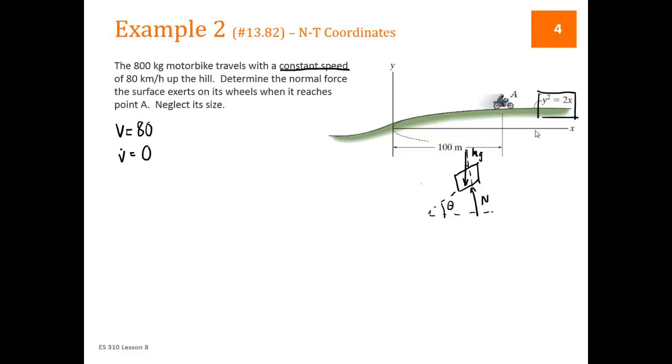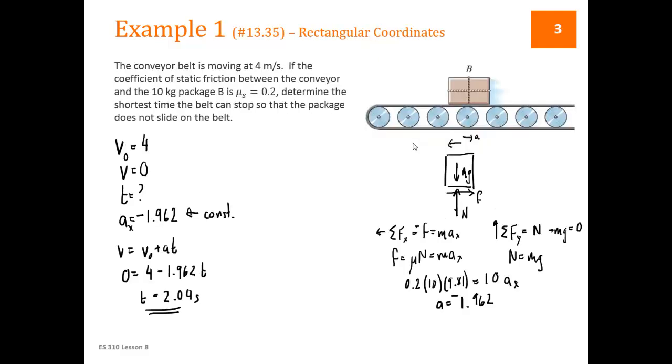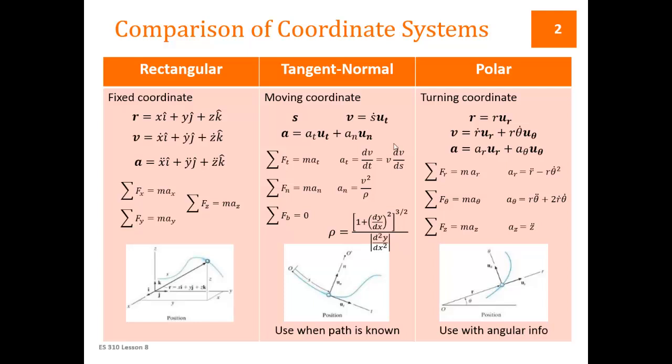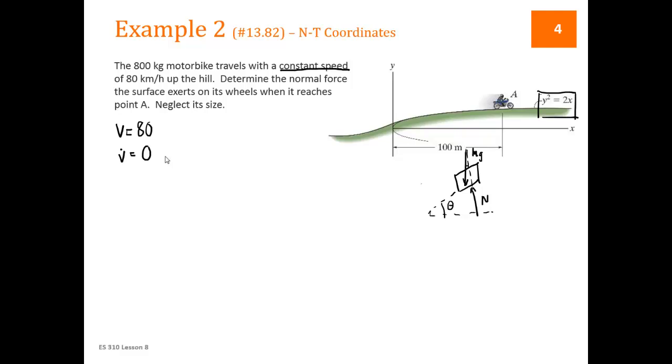We're also going to have to find, if we're using N-T coordinates, we're going to be using these center equations. So A_T, there's no tangential acceleration. A_N is v squared over rho. We don't know rho. We don't know the radius of curvature at A. But we do know the relationship between y and x.